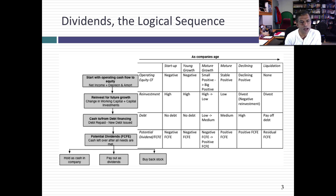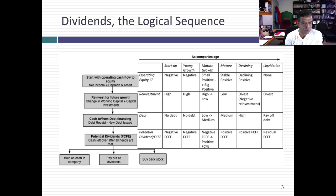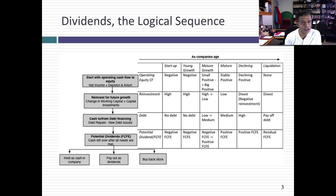I call this a potential dividend. It sounds fancy, but essentially it is whatever cash is left over after your reinvestment needs and your debt cash flows. I call this free cash flow to equity. That free cash flow to equity is what you can afford to pay out as dividends. Now, do you have to pay it out as dividends? Not necessarily. There are three things you can do with this free cash flow to equity.